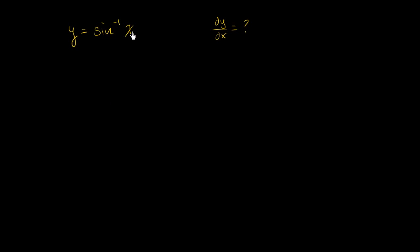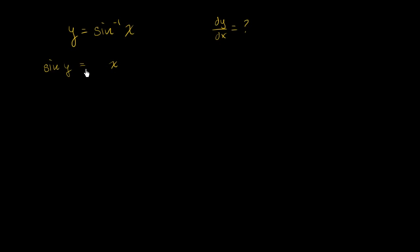So if y is the inverse sine of x, that's equivalent to saying that sine of y is equal to x. Now we have things that we're a little bit more familiar with, and we can do a little bit of implicit differentiation.